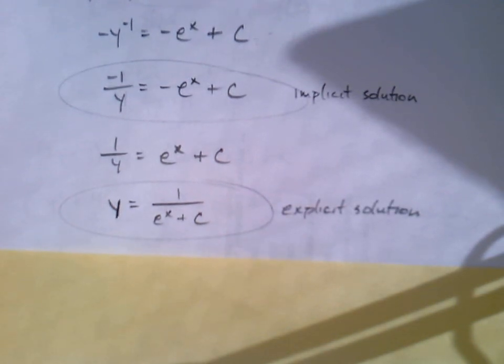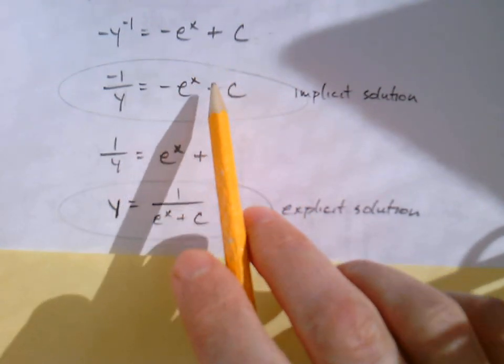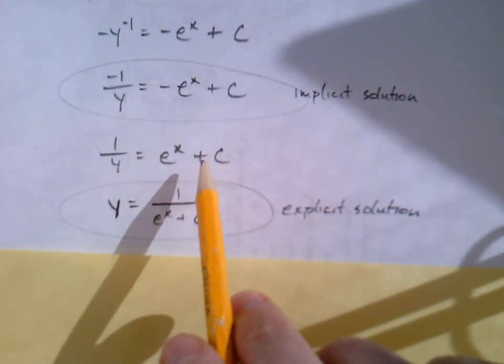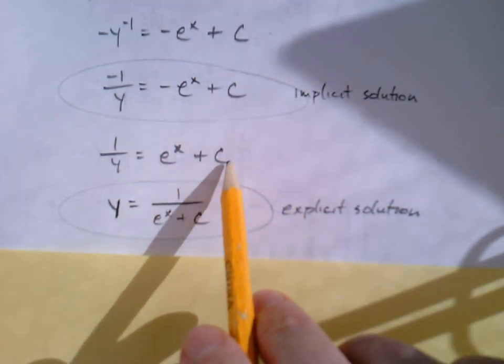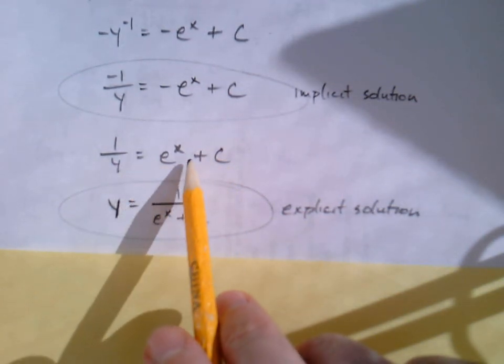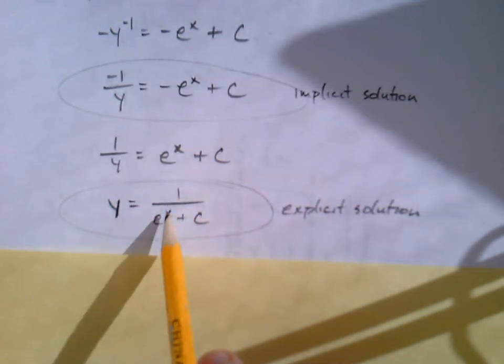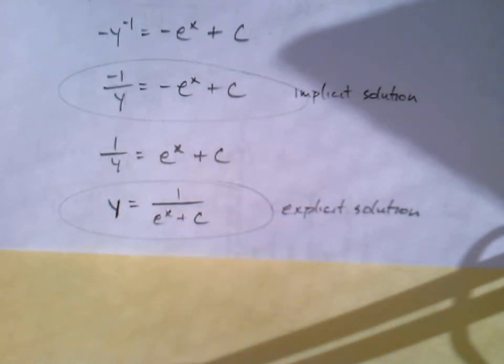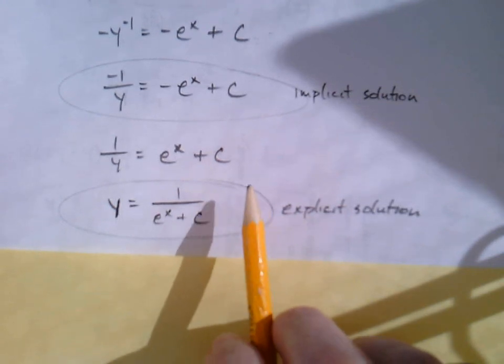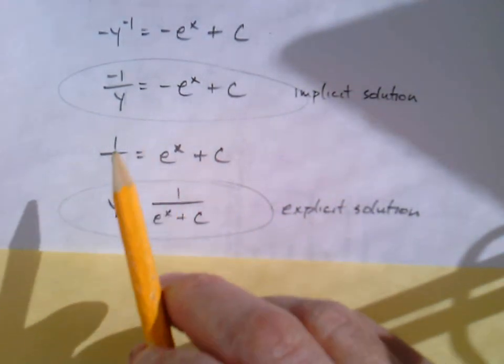Finally, I've got one over y here. I'm going to take the reciprocal of both sides. One over y becomes y, and the reciprocal of this entire side, I've got one over e to the x plus C. Now I've got myself a nice explicit solution, and I've answered the first part of the question.